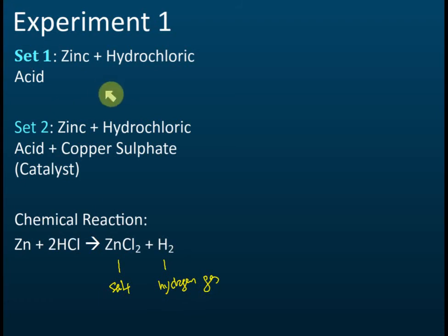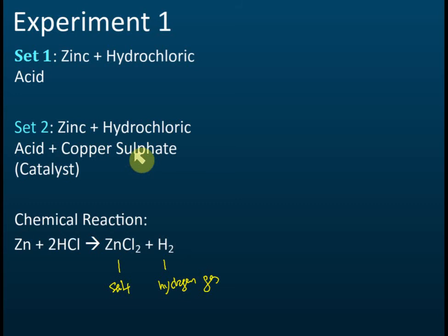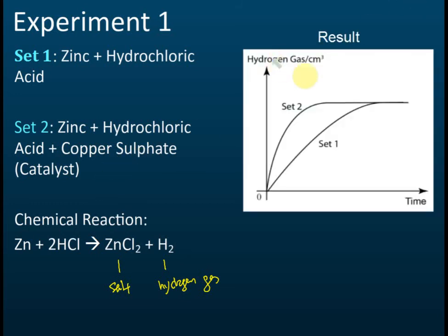We repeat the experiment with zinc and hydrochloric acid — everything remains the same, concentrations also remain the same — but in the second set, we use copper sulfate as a catalyst. We plot the volume of hydrogen gas released against time and compare the results for set one and set two.